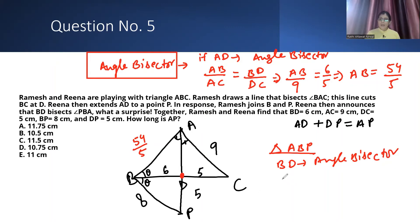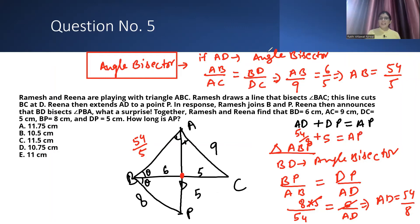I will use the same property in this triangle. Here also, the ratio of BP upon AB equals BP upon AD. BP value is 8, AB value is 54 upon 5. BP value is 5, you get the value of AD. 5 cancels, so you get AD equals 54 by 8. You have DP value of 5.